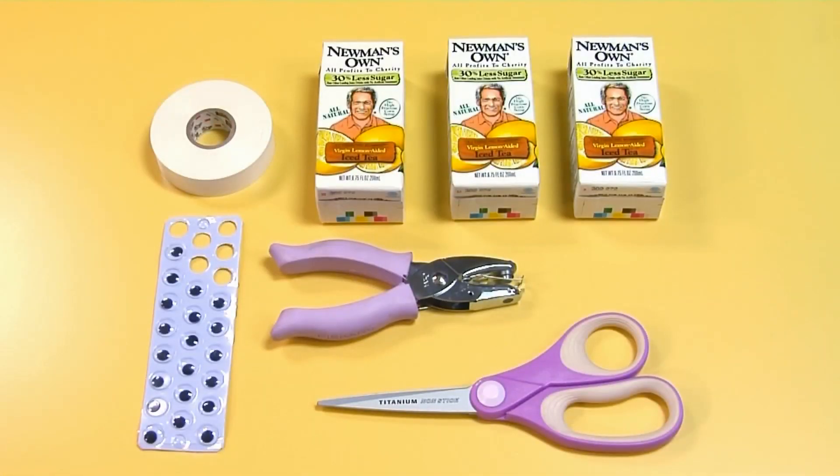For this craft, you'll need juice boxes, scissors, a hole punch, white vinyl electrical tape, and googly eyes.